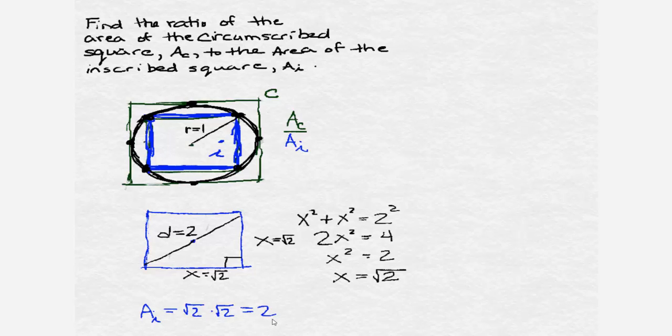Let's find the area of the circumscribed square. To do that, we need to look at the relationship between the radius of the circle and the size of the circumscribed square in green. This time I'm going to redraw the radius, so it goes from the center of the circle, which is also the center of the circumscribed square, to the edge of the circle where it meets the circumscribed square. Since the center of the circle is in the center of the square, we see that the radius, which is one, is going to extend from the center of the square downward and upward.